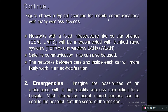Networks with fixed infrastructure like cellular phone GSM or UMTS will be interconnected with trunked radio systems and wireless LANs. Satellite communication links can also be used. Networks between cars and inside each car will more likely work in an ad hoc fashion — ad hoc meaning the network is not permanent. As you move from one place to another, the best available base station connects to your mobile device. The connection always changes and is not fixed — that is why it is called ad hoc.